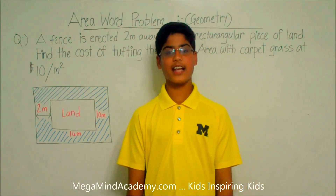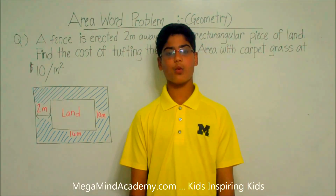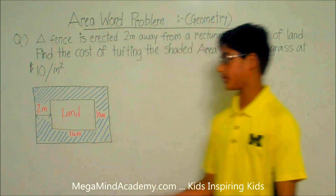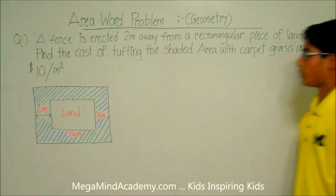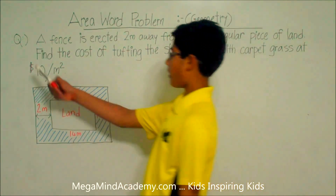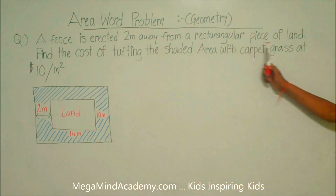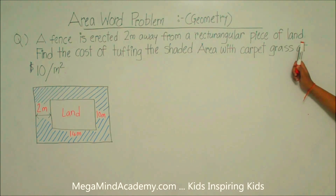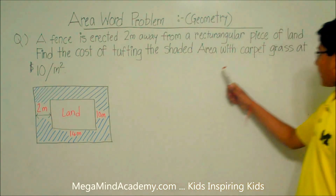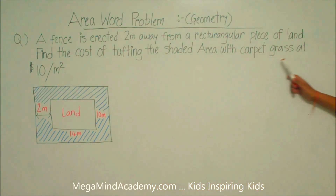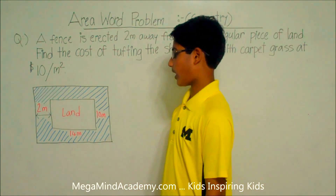Hi! Today we're going to learn about area word problems in geometry. Let's say we have a problem like: a fence is erected two meters away from a rectangular piece of land. Find the cost of tufting the shaded area with carpet grass at the cost of $10 per meter squared.